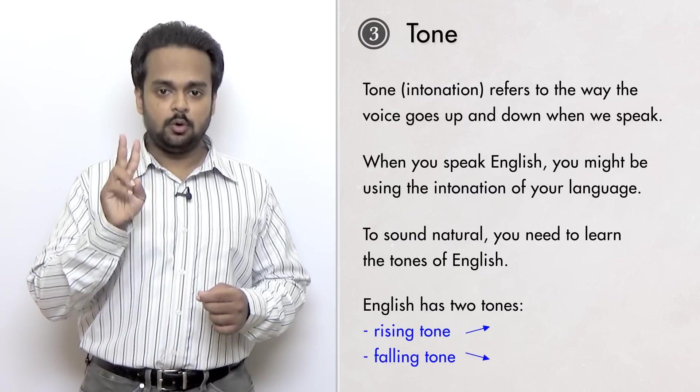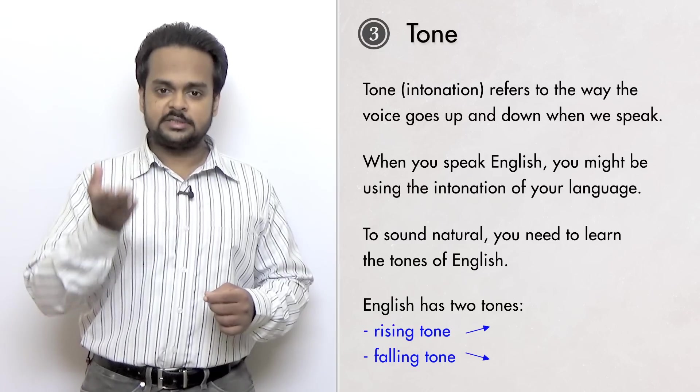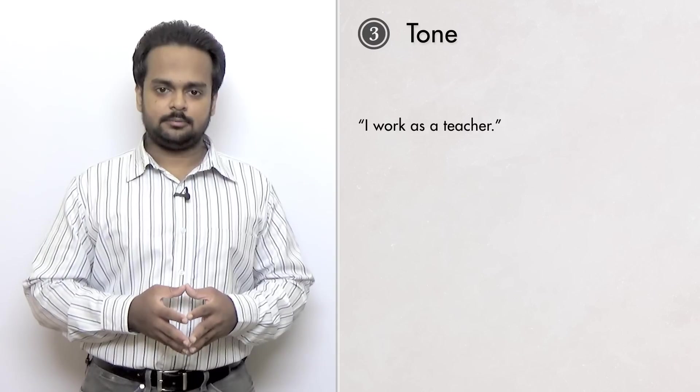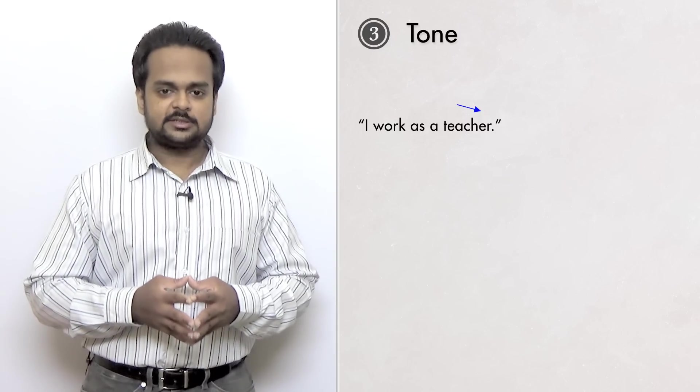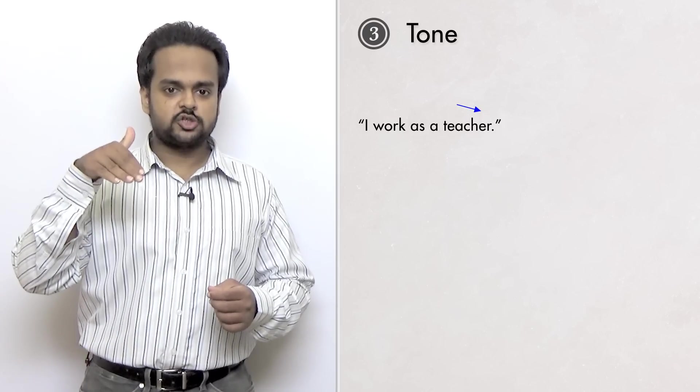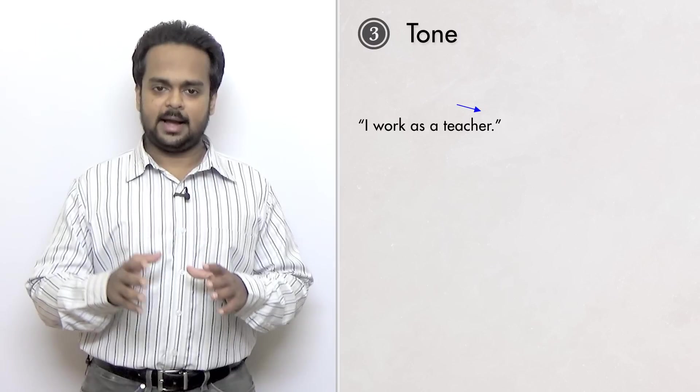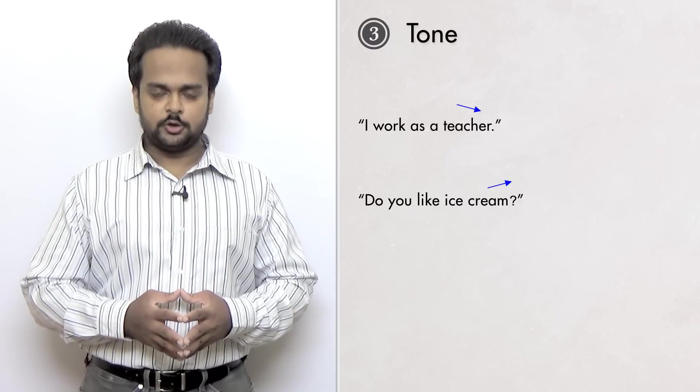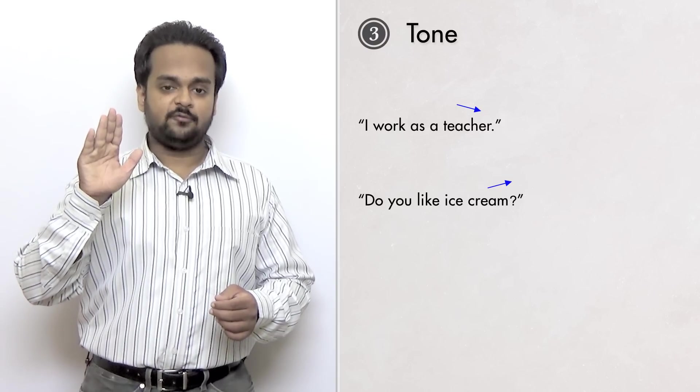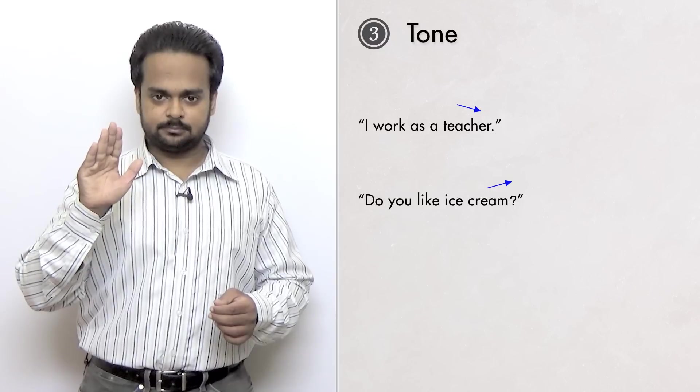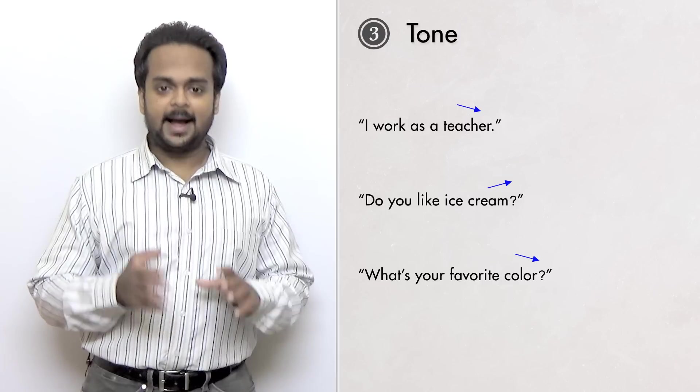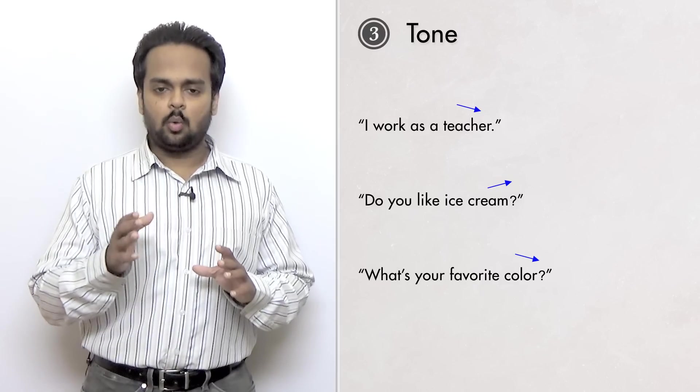Thankfully, English has just two major tones. These are called a rising tone and a falling tone. Have a look at this example. I work as a teacher. This is a falling tone because notice how my voice goes down in pitch at the end. Here's another example. Do you like ice cream? This sentence has a rising tone because my voice goes up at the end. And this one, What's your favourite colour?, has a falling tone.